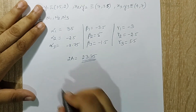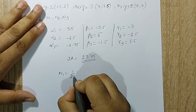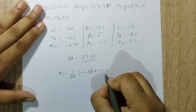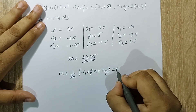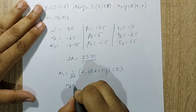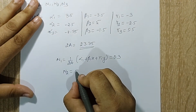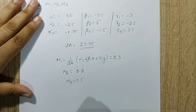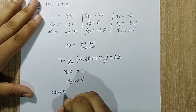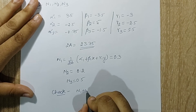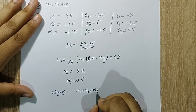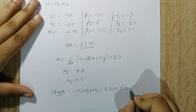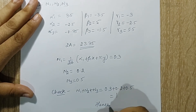Next I go for calculation of n1: 1 upon 2A times (alpha 1 plus beta 1·x plus gamma 1·y). Solving it, you get 0.3. Similarly n2 by the same shape function formula gives 0.2, and n3 is 0.5. Checking: n1 plus n2 plus n3 is 0.3 plus 0.2 plus 0.5, which is exactly 1. Hence I have checked my solution.